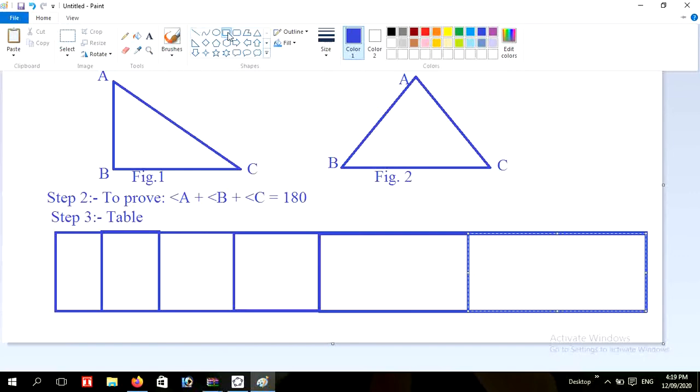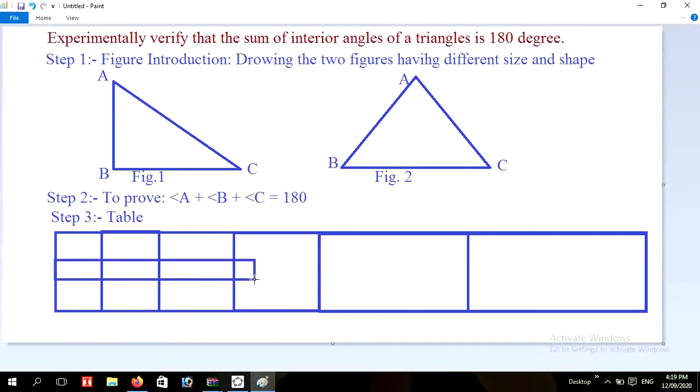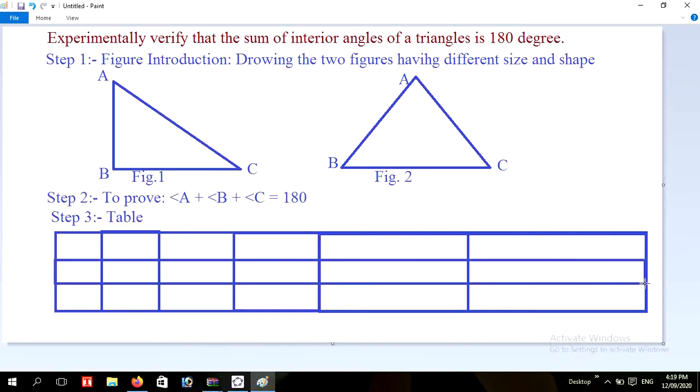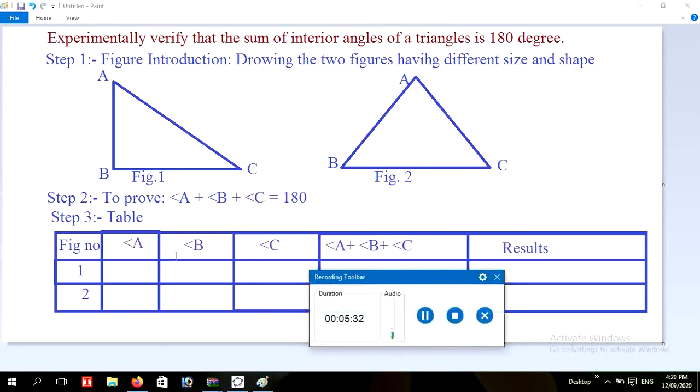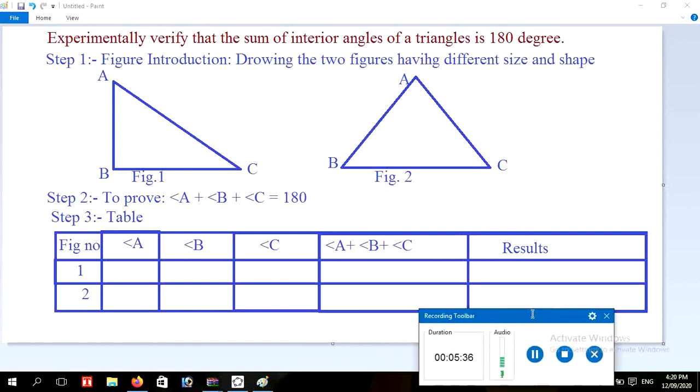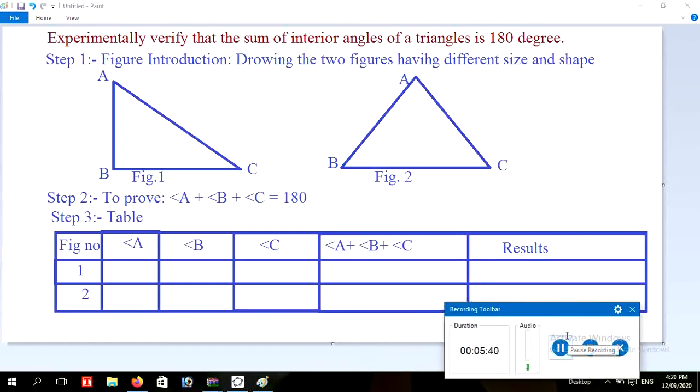Drawing another table. Write here figure number, and write here 1 and here 2, and right here angle B, angle C, angle A plus B plus C, and here result.